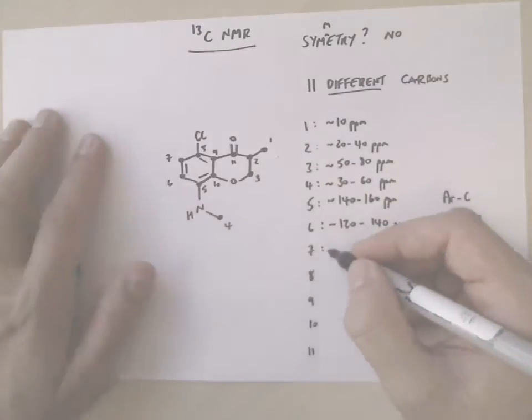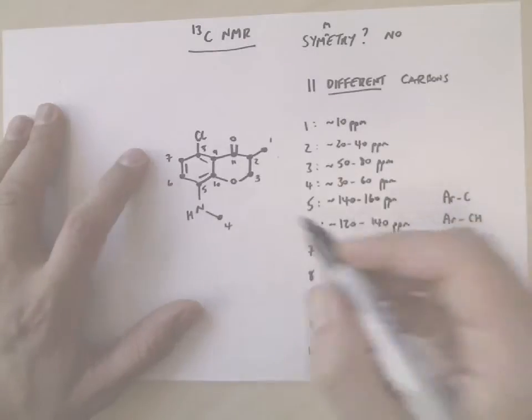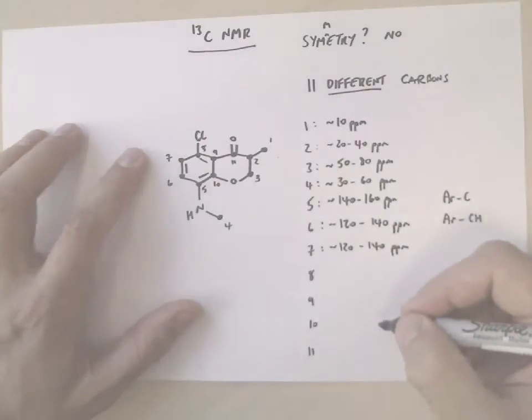7 is the same, but remember when we talk about exact values, the chlorine and the amine also have an effect. But the range is going to be the same between carbon 6 and 7.